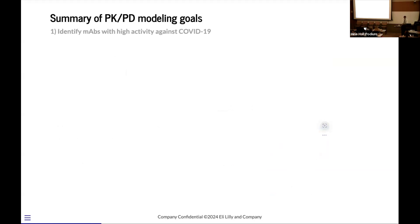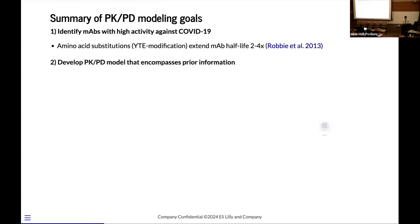From a PK-PD modeling perspective, we are interested in identifying monoclonal antibodies that have high activity against COVID. Specifically, we're then going to modify the antibodies with this YTE mutation that was originally noted in 2013 that extends the half-life of antibodies roughly two to four times to give them a half-life around 100 days. This really is what is enabling the idea of preventative monoclonal antibodies that can be given somewhat infrequently. We want to develop a PK-PD model that encompasses whatever prior information we have. And then, we're going to calculate the dose required to maintain efficacy for one year.